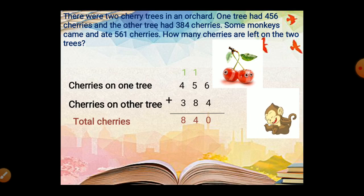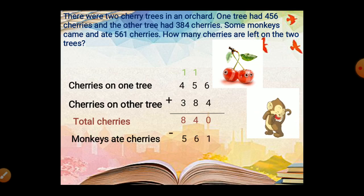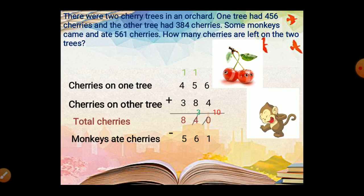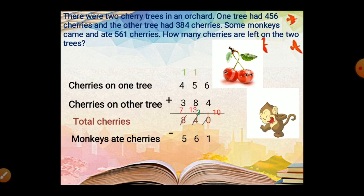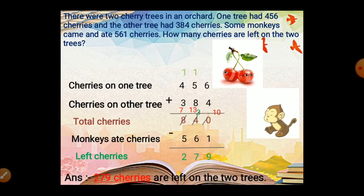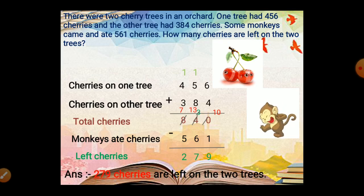Monkeys ate 561 cherries, so subtract 561 from 840. 0 minus 1 — not possible, borrow from tens: 0 becomes 10, 4 becomes 3. Now 3 minus 6 — not possible, borrow from hundreds: 3 becomes 13, 8 becomes 7. 10 minus 1 is 9, 13 minus 6 is 7, 7 minus 5 is 2. Our answer is 279. 279 cherries are left on the 2 trees.